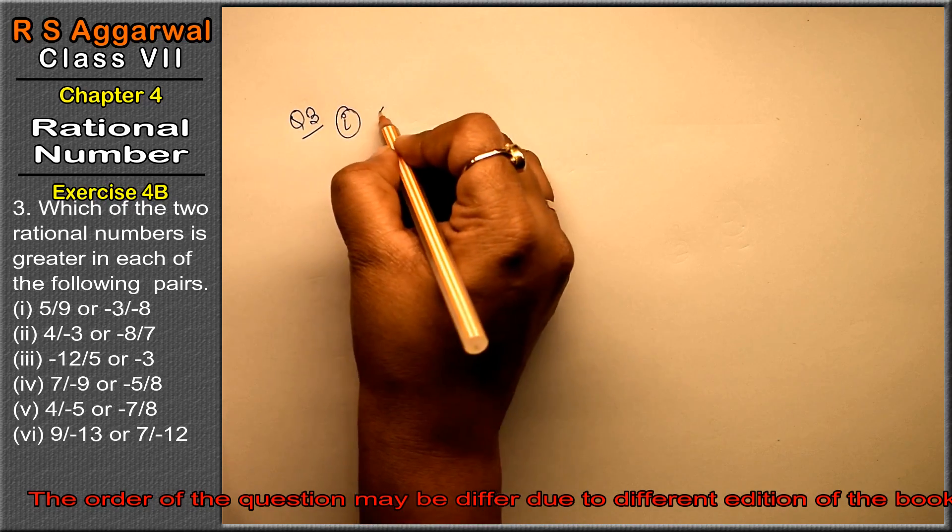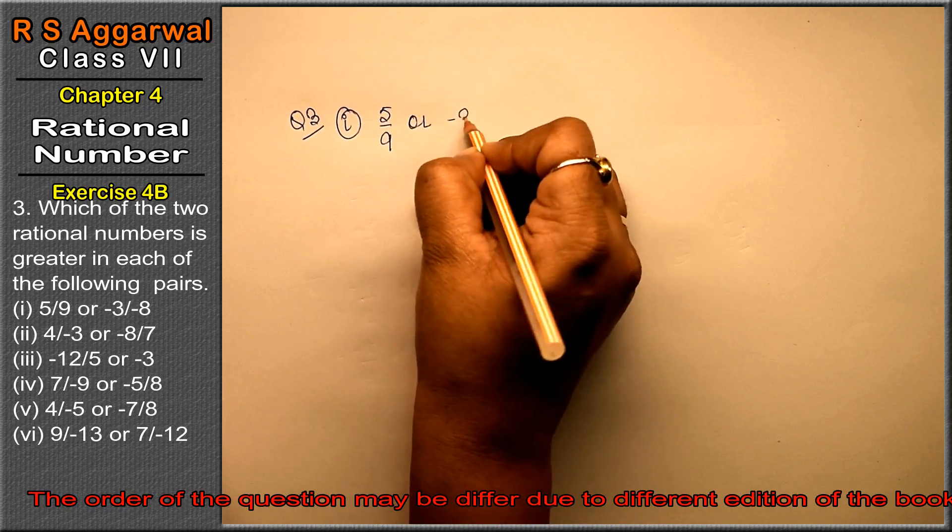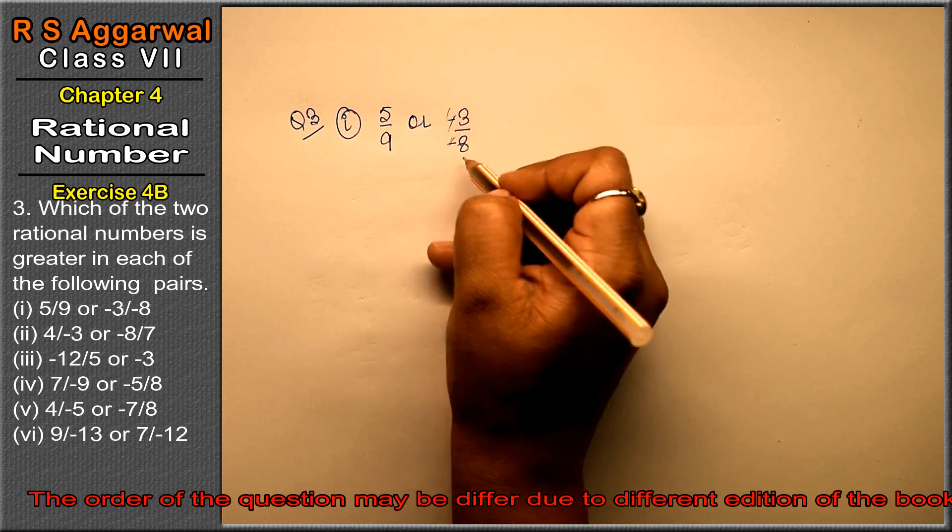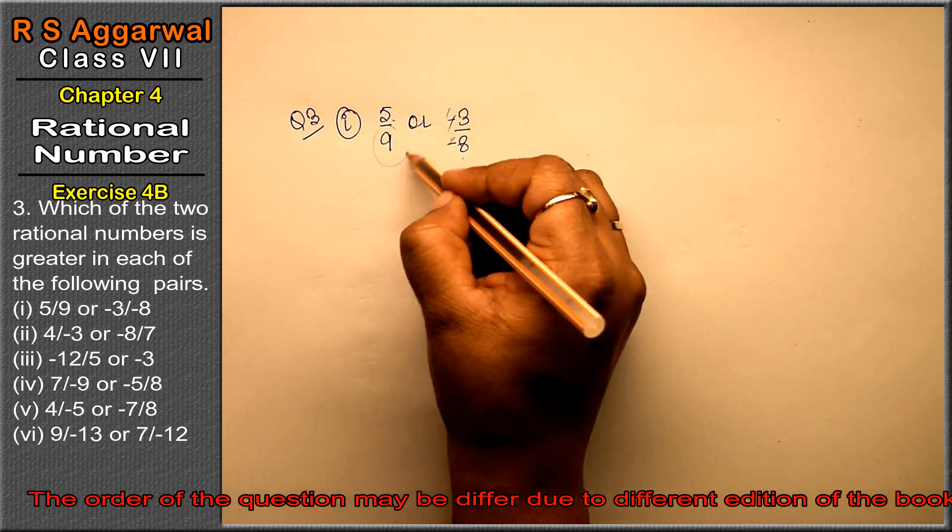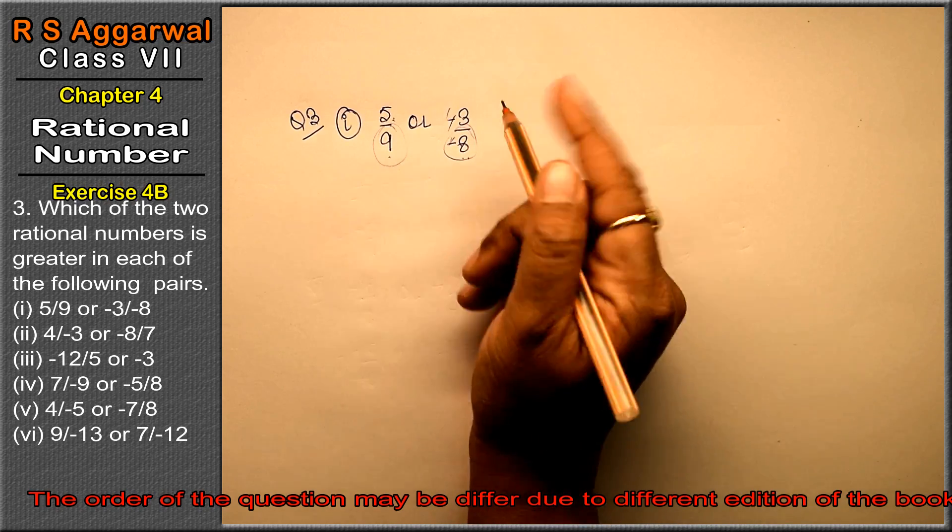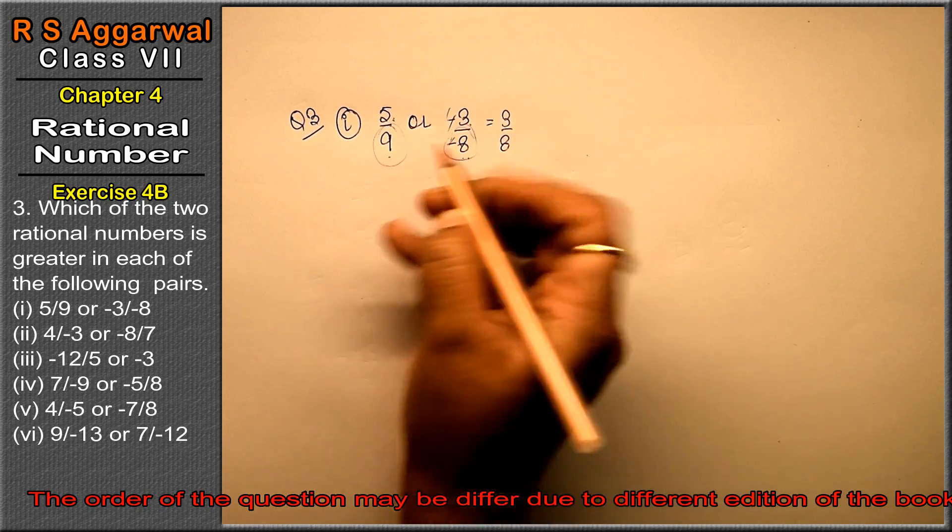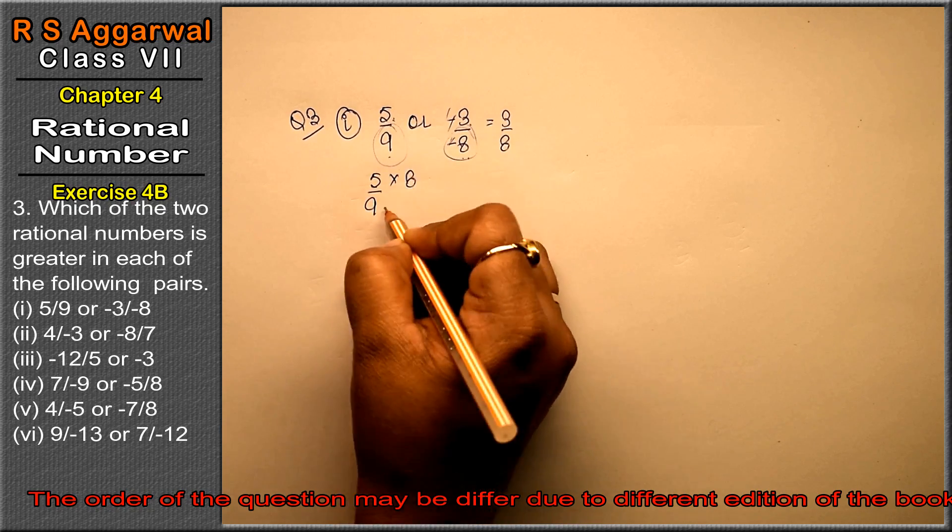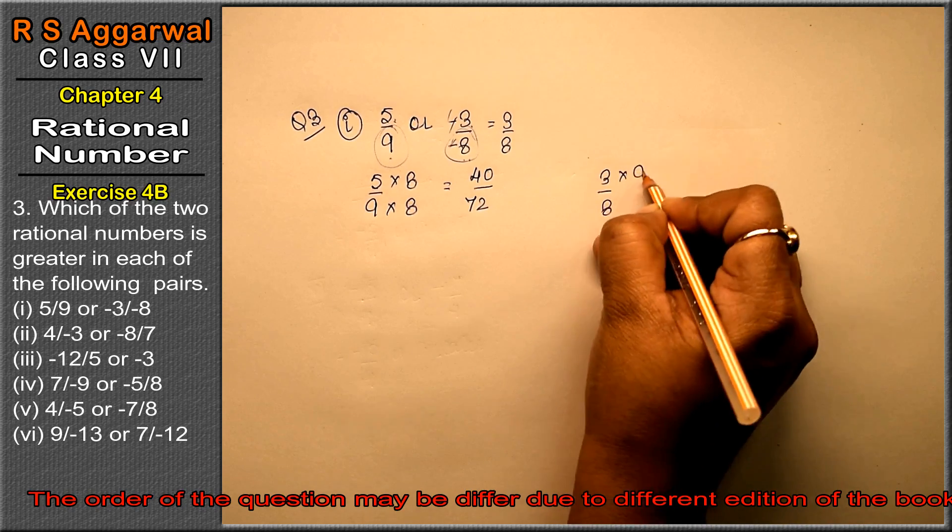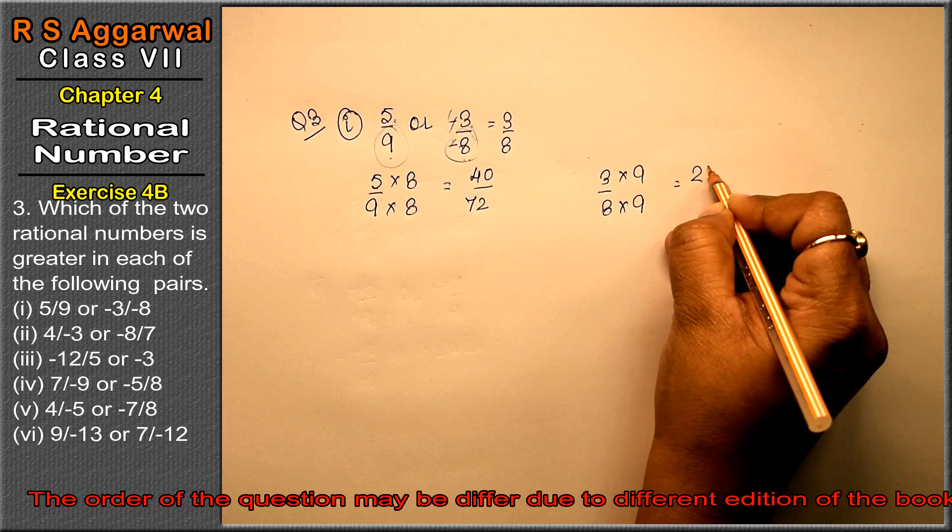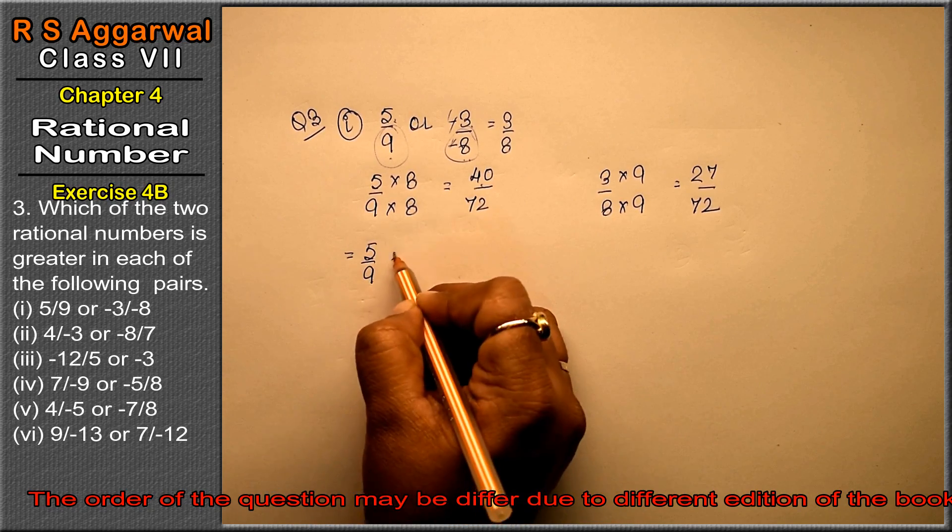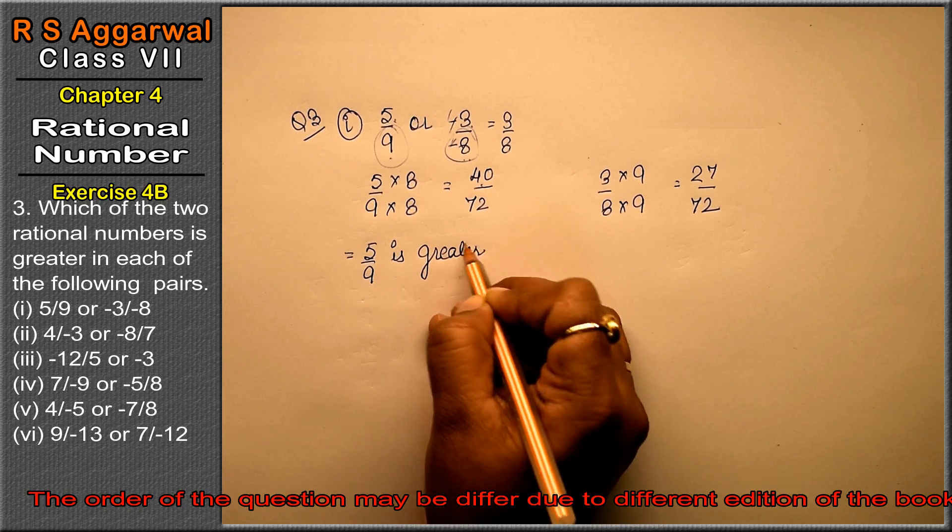First part is 5/9 or -3/-8. If we cancel the minus signs, we get 3/8. Now we need to equalize the denominators. Multiply 5/9 by 8 to get 40/72, and multiply 3/8 by 9 to get 27/72. In positive numbers, 40 is greater, so 5/9 is greater.